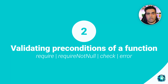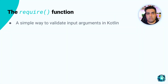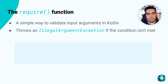Number two: validate preconditions of a function using require, requireNotNull, check, and error functions. In Kotlin, these functions are used to validate conditions and ensure that your code runs safely. The require function is a simple way to validate input arguments — it throws an IllegalArgumentException if the condition isn't met, helping you catch issues early. This example uses require(age > 0) with a proper error message to ensure age is a positive number at runtime.